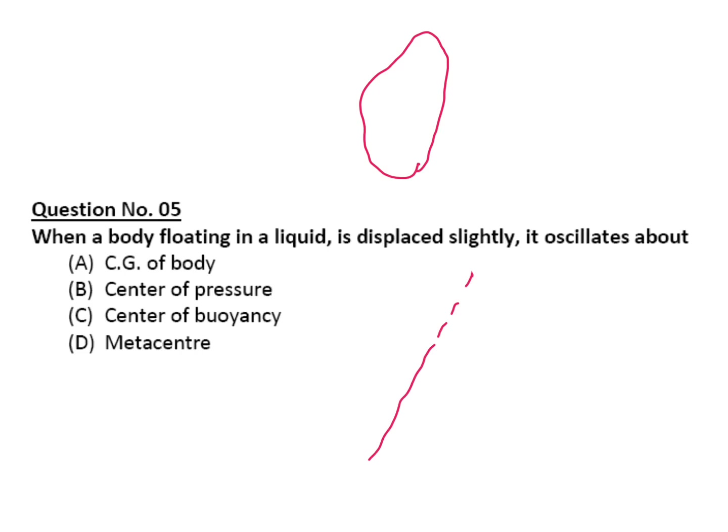Your condition is metacenter. Then your gravity center of gravity G and center of buoyancy. If you are oscillating like this, it oscillates about your metacenter. D is your correct answer.